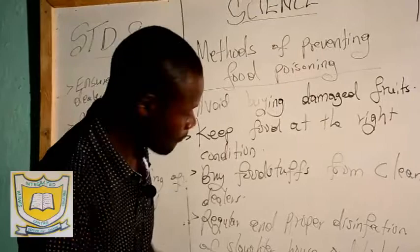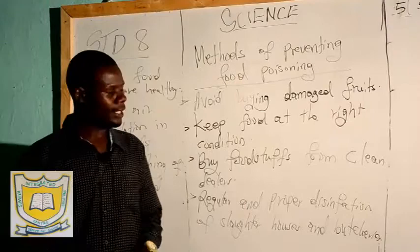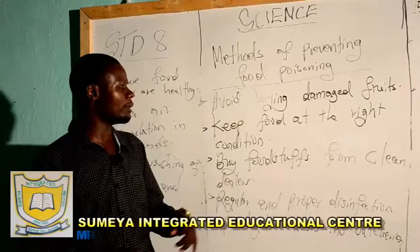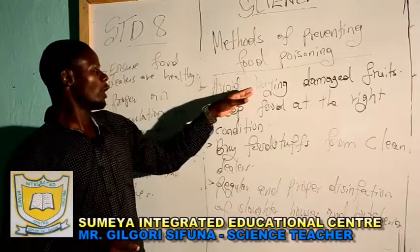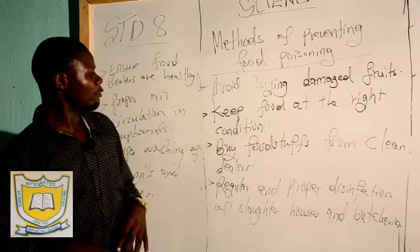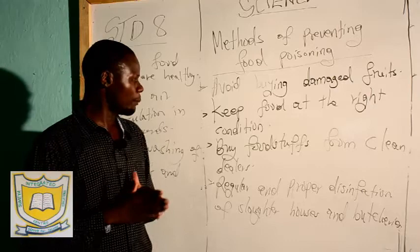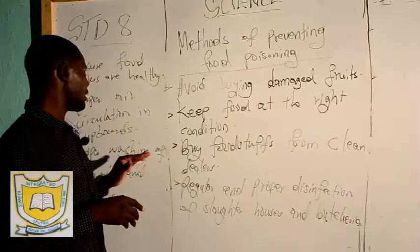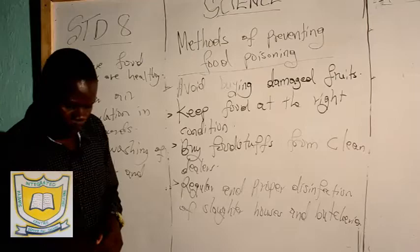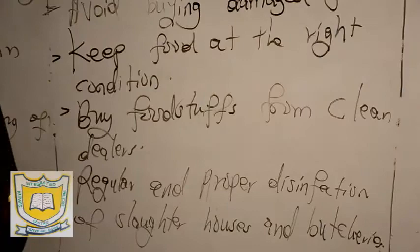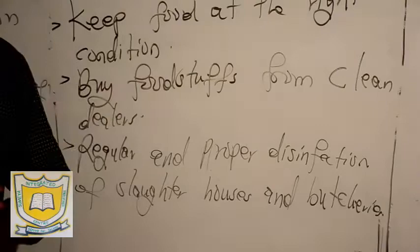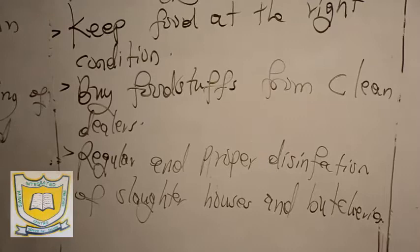These are the methods of preventing food poisoning. Avoid buying damaged fruits — when you go to the market, some mangoes, apples, avocados, and bananas have been damaged. If you buy them, you are just poisoning yourself. Make sure that the fruits you buy have not been damaged. Keep food at the right condition — where you keep food must be clean and have free air circulation. Buy food stuffs from clean dealers — make sure the person who is selling food is clean.